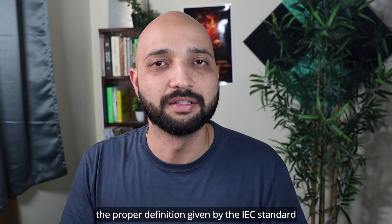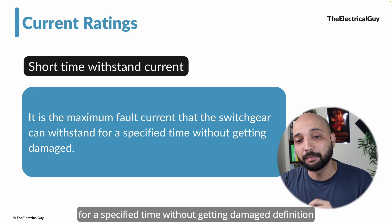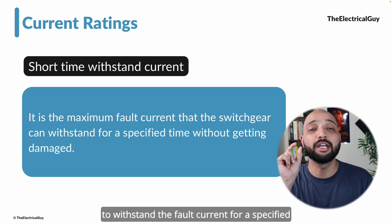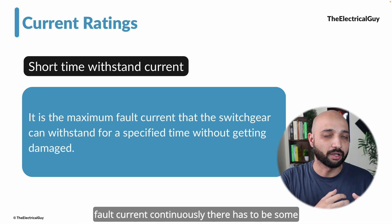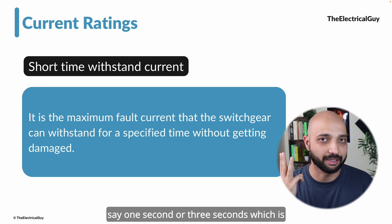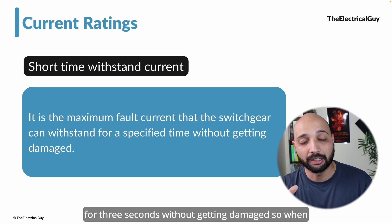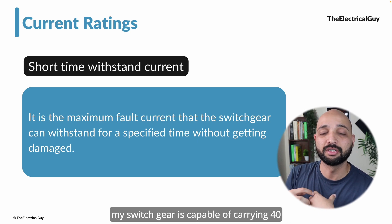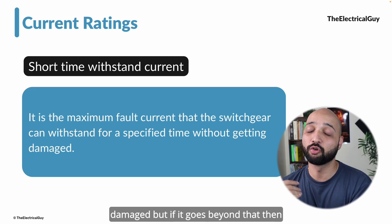The IEC defines short time withstand current as the maximum fault current that the switchgear can withstand for a specified time without getting damaged. It is the capability of the switchgear to withstand the fault current for a specified amount of time. We are not talking about continuous current carrying capacity — no switchgear is designed to carry fault current continuously. Again, the limitation is one second or three seconds, which are the standard values followed throughout the industry. When we specify 40 kA for three seconds, it means the switchgear is capable of carrying 40 kA for up to three seconds without getting damaged. Beyond that, we cannot guarantee.